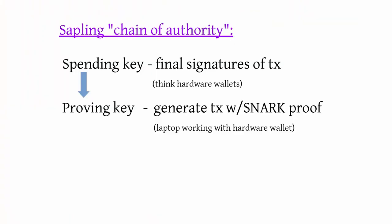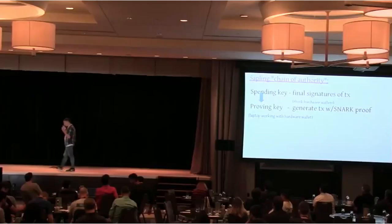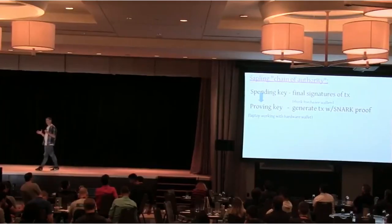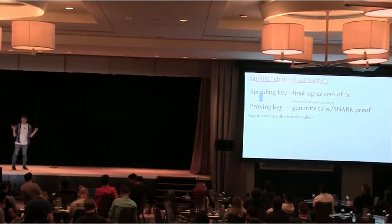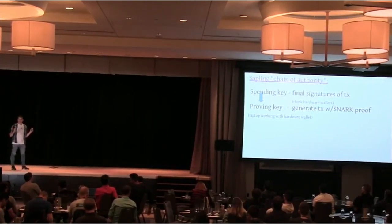These arrows are always one way. So from the spending key, you can generate the proving key, but you can't generate the spending key from the proving key. The proving key is what generates the actual transaction with the snark proof.